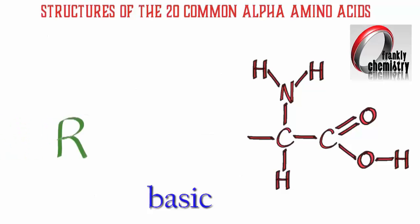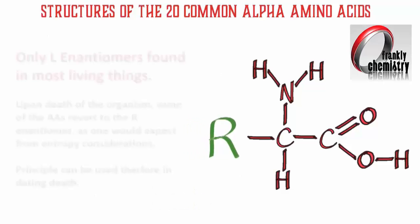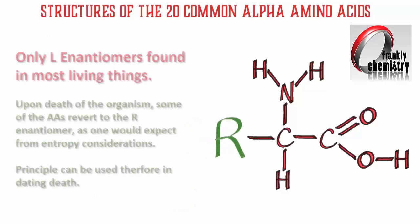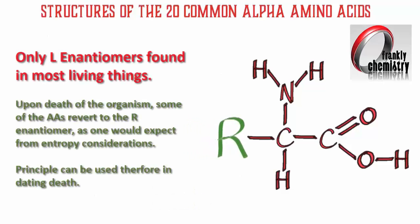So that's been a look at all 20 amino acids, each with a different R group. Do note that only L enantiomers are found in most living things. Upon the death of an organism, some of the amino acids will begin to revert to the other enantiomer — the D enantiomer — as one would expect from entropy considerations. Thanks for listening, and do consider looking at others in the series on amino acids and proteins.